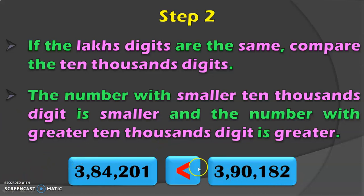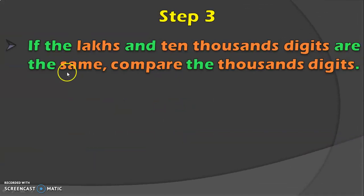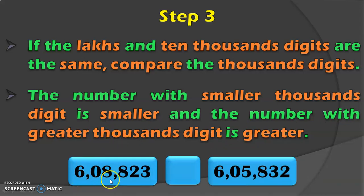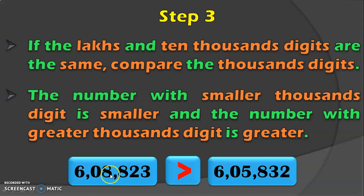Suppose the lakhs place and the 10,000th place are also having the same digit in both numbers. In such cases, move on to the next place value — compare the 1,000th digit. The number with the smaller 1,000th digit is smaller and the number with the greater 1,000th digit is greater. For example, 6,08,823 and 6,05,832 have the same lakhs and 10,000th place digits, so we look at the 1,000th place where we have 8 and 5. Since 8 is greater than 5, we conclude 6,08,823 is greater than 6,05,832.